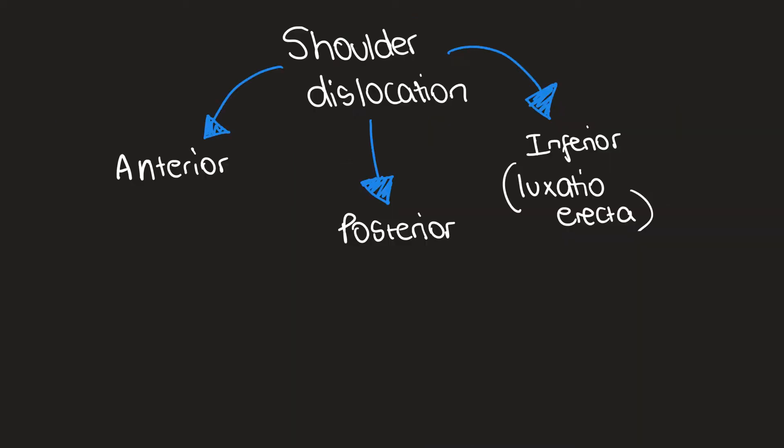There are three types of shoulder dislocation: anterior, posterior, and least commonly inferior, also known as luxatio erecta.